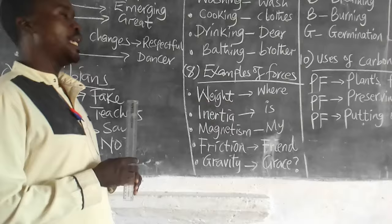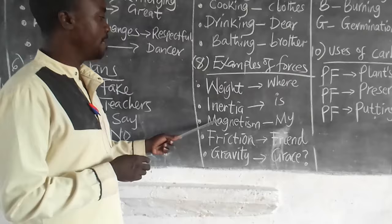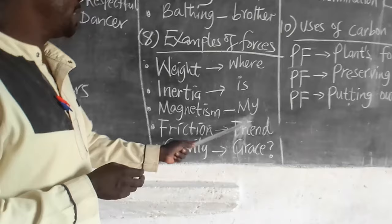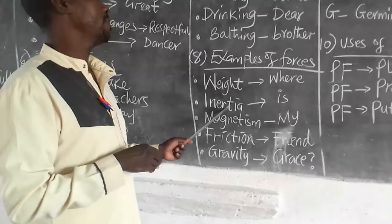Number eight, examples of forces. Force is a push or a pull on an object. Examples: weight, energy, magnetism, friction, gravity. Mnemonic: where is my friend Grace? Inertia is the tendency of an object to resist change of state.